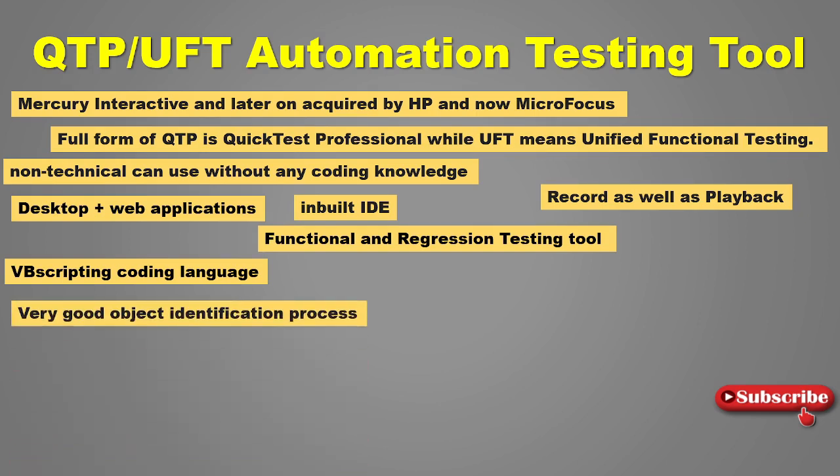It has a good object identification process where you have an Object Spy in this tool. It can accurately find any locator. In a web browser you would normally inspect and find the XPath and put it in your automation script, but here you can use Object Spy from your browser or from the tool itself to easily locate elements in the browser or in any desktop application. It will provide you the accurate locator or accurate path of that element, which is one of the added advantages of this tool.